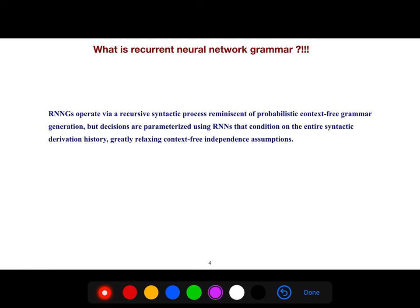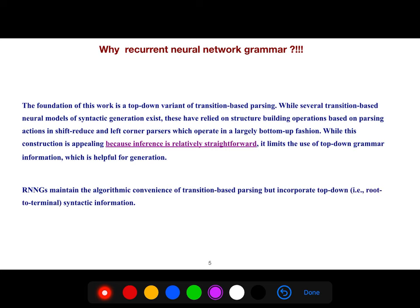And so, what is recurrent neural network grammar? We say it operates via recursive syntactic processes, just like probabilistic context-free grammar. But decisions are parametrized using RNNs, because we have some decisions, such as shift it, reduce it, or another thing that is introduced in this paper.